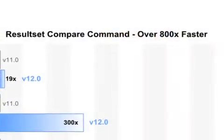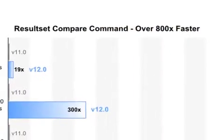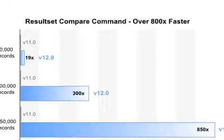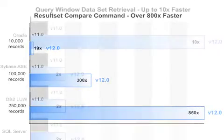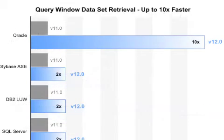With this release, AquaData Studio once again leaps ahead with remarkable speed improvements of 100% to 800% when working with big data sets.